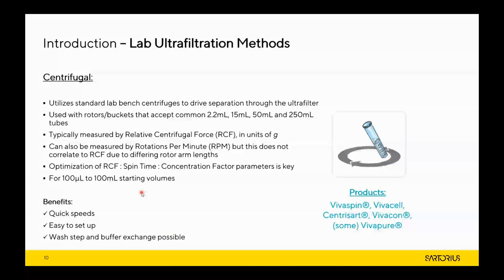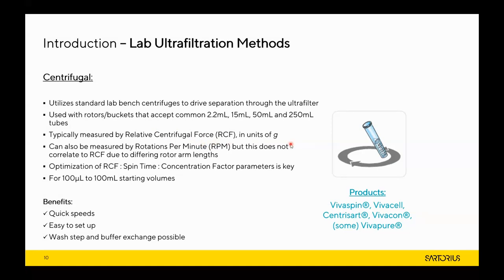Taking an overview of the centrifugal method: centrifugal force drives separation through the ultrafilter in a typical lab bench centrifuge. These devices are typically accepted in most rotors and buckets as they meet common SPS sizes such as 15 and 50 mL falcon tubes. It's usually measured by RCF (relative centrifugal force) in units of G, rather than RPM, since RCF is a constant — the same RPM will produce a different RCF depending on the length of the centrifugal rotor arms. The combination of RCF, spin time, and desired concentration factor is key for optimization.